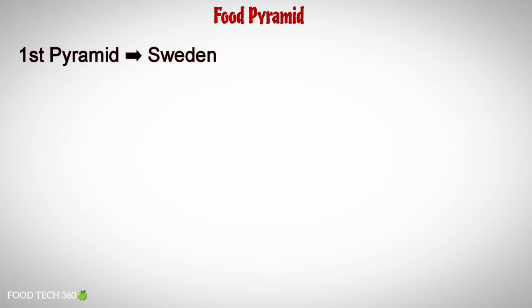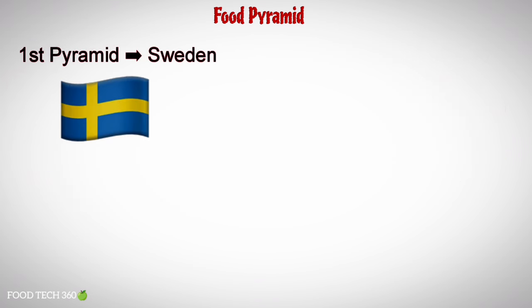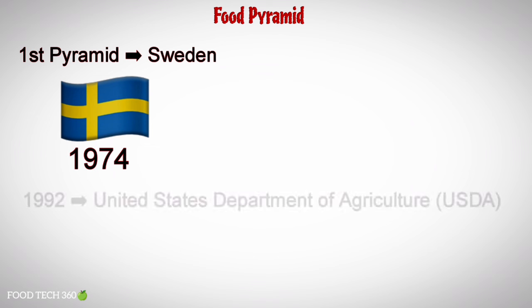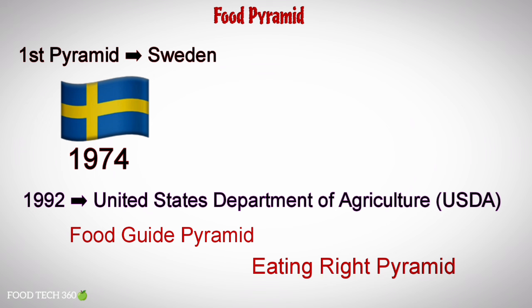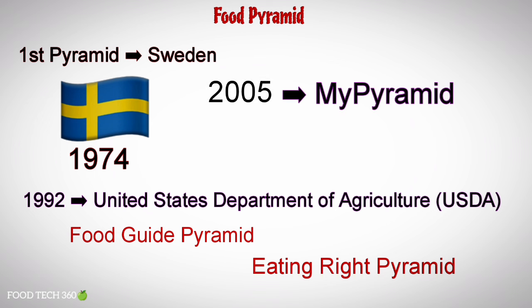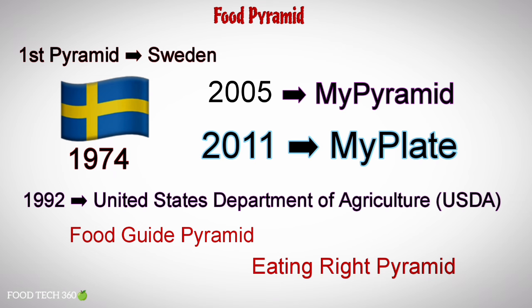The first pyramid was published in Sweden in 1974. In 1992, the United States Department of Agriculture introduced a food pyramid called the Food Guide Pyramid or Eating Right Pyramid. It was updated in 2005 to MyPyramid and replaced by MyPlate in 2011.